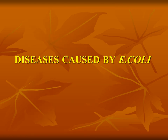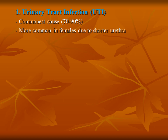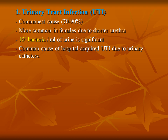Diseases caused by E. coli: there are five types. First, urinary tract infection, which is more common in females due to the shorter urethra. The bacterial count in urine is significant — 10^5 bacterial cells per milliliter of urine is considered significant bacteriuria, while 10^3 bacteria per milliliter is considered negligible and not a disease. More than 10^5 bacteria is significant. It is also a common cause of hospital-acquired infection. There are two types of UTI caused by E. coli: cystitis and pyelonephritis.